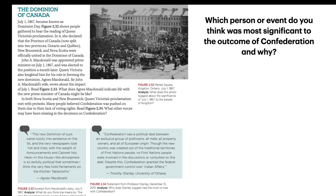In both Nova Scotia and New Brunswick, Queen Victoria's proclamation met with protests — many people believed confederation was pushed on them due to their lack of voting rights. Confederation was a political deal between an exclusive group of politicians: all male, all property owners, and all of European origin. Though the new country was created out of the traditional territories of First Nations peoples, no First Nations people were involved in the discussions or consulted on the deal. Despite this, confederation granted the federal government control over Indian affairs.